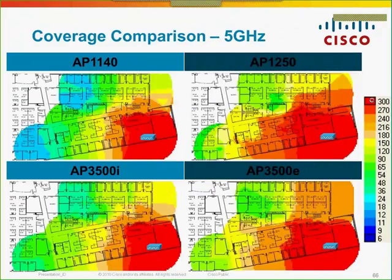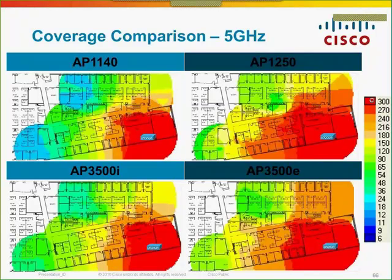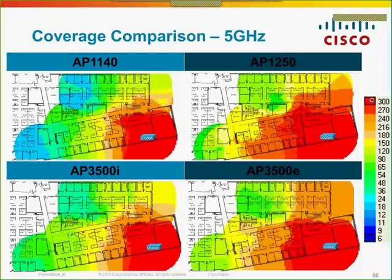The coverage patterns between the 1140, 1250, and 3500 are very similar. If you do a site survey with a 1140, you can drop a 3500i in its place. If you surveyed with a 1250, you can put a 3500i in its place. We've put a lot of effort into making sure you don't have to resurvey when upgrading — all our AP changes are done so the client gets fewer retries, and we're doing things to make sure we can beamform and beam steer.